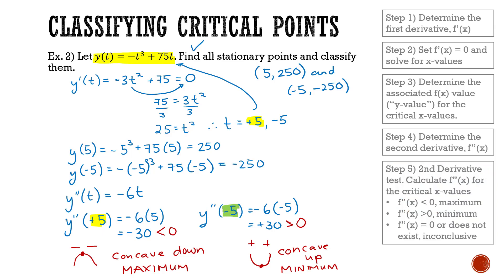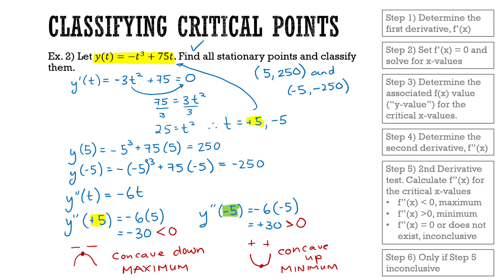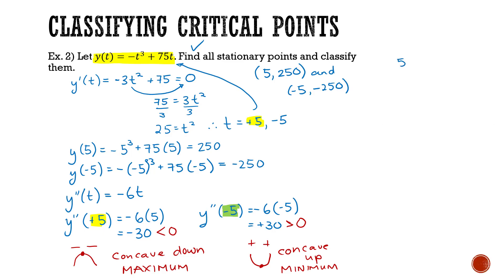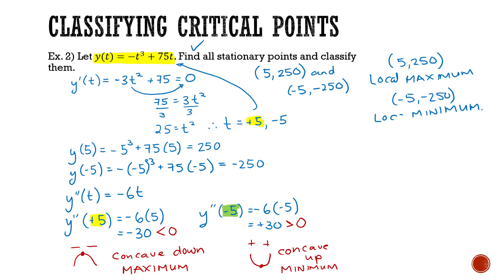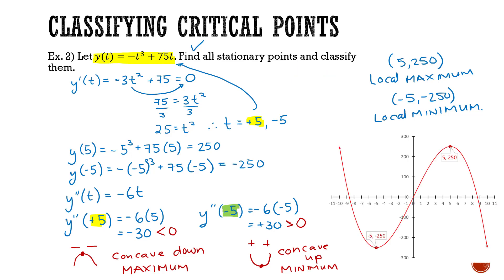Step five is done. Because step five was conclusive, we don't need to do step six. We have found and classified our critical points: five comma 250 is a maximum, and negative five comma negative 250 is a minimum. We should note these are local maximum and local minimum to be more accurate. Examining the graph confirms the local minimum at negative five to negative 250 and the local maximum at positive five to 250. We now have the capability to determine local mins and maxes without graphing.